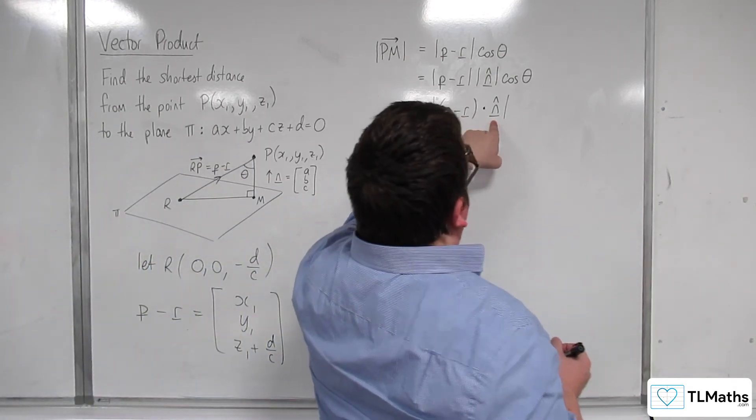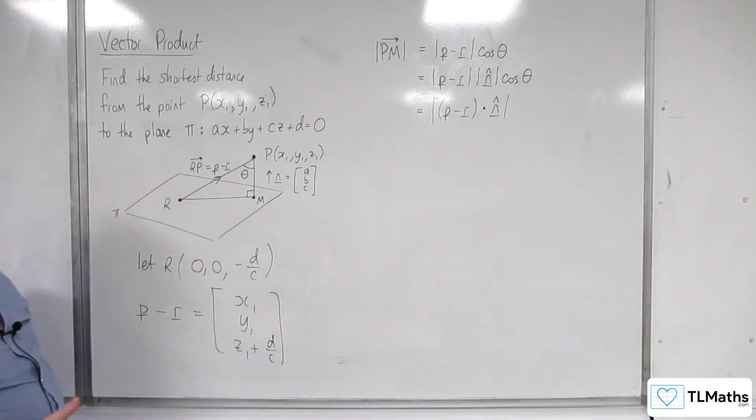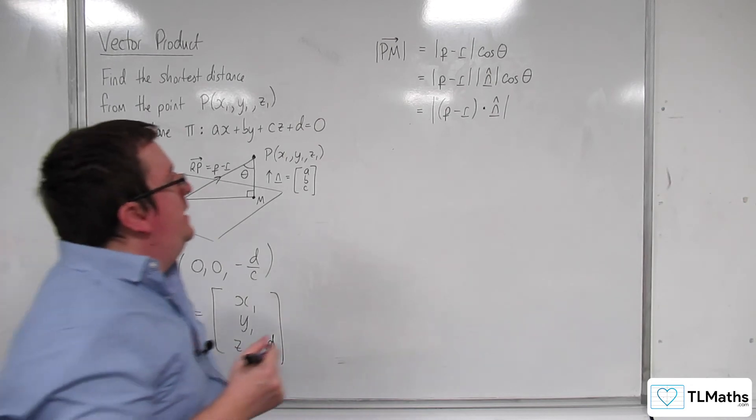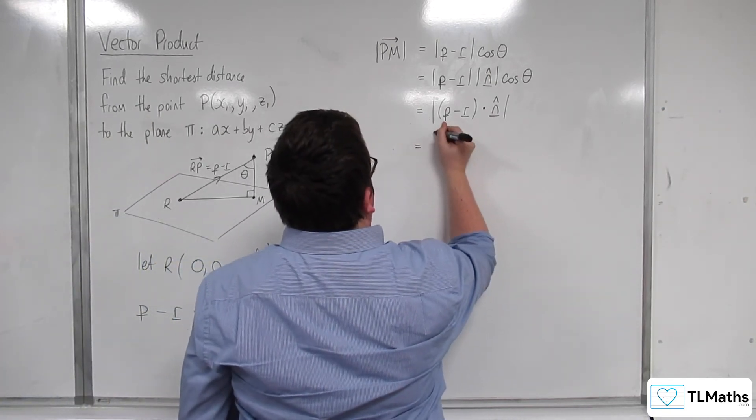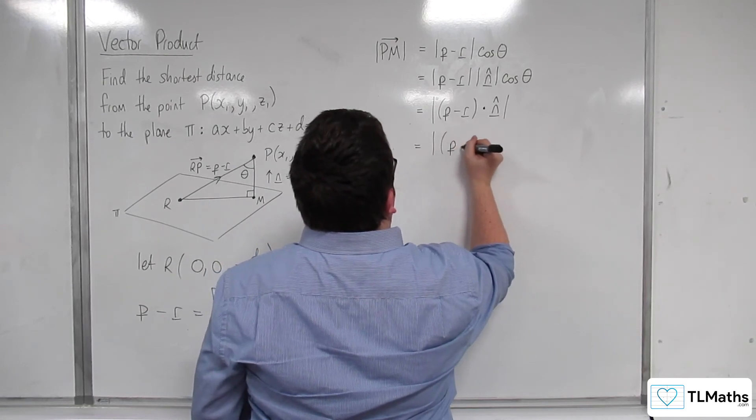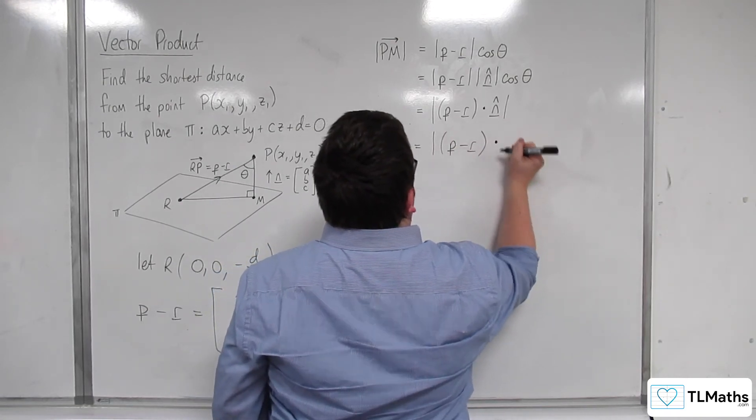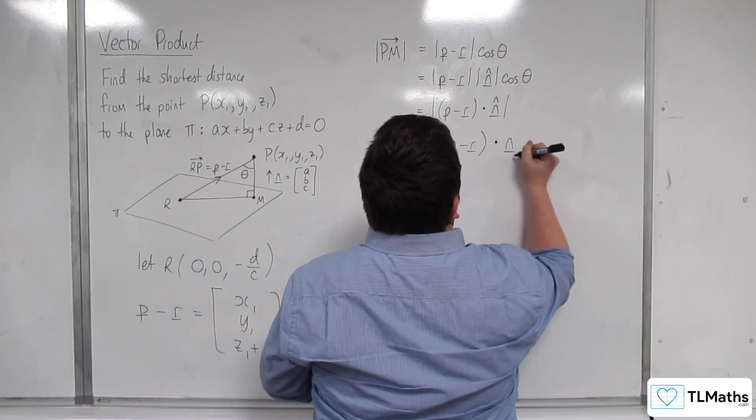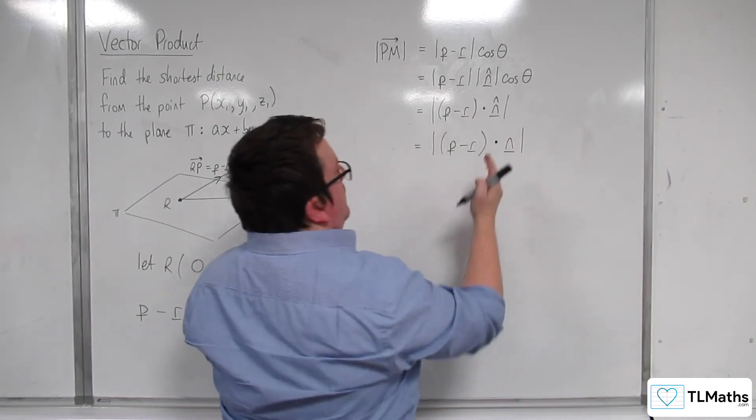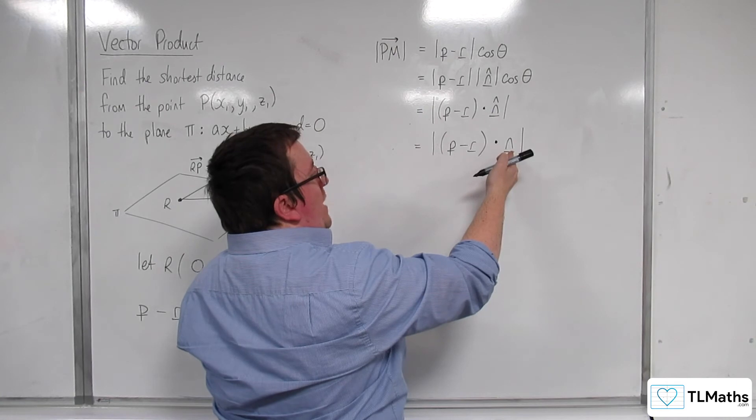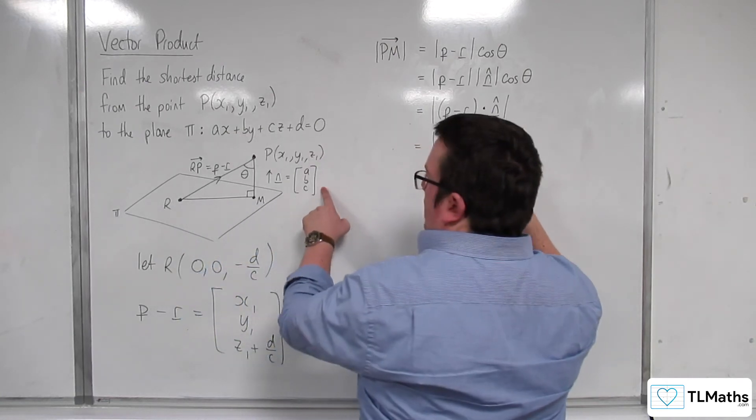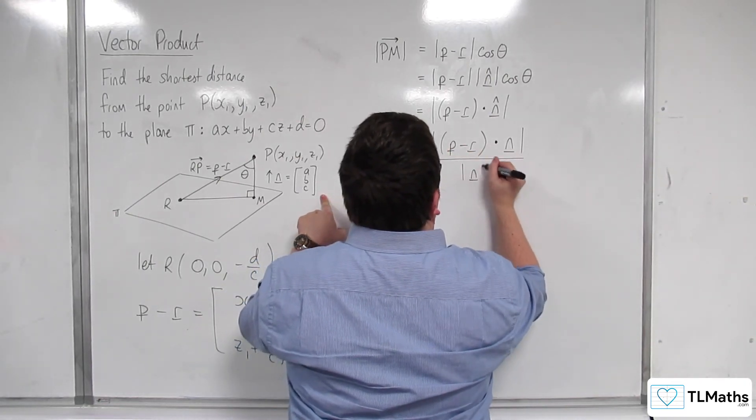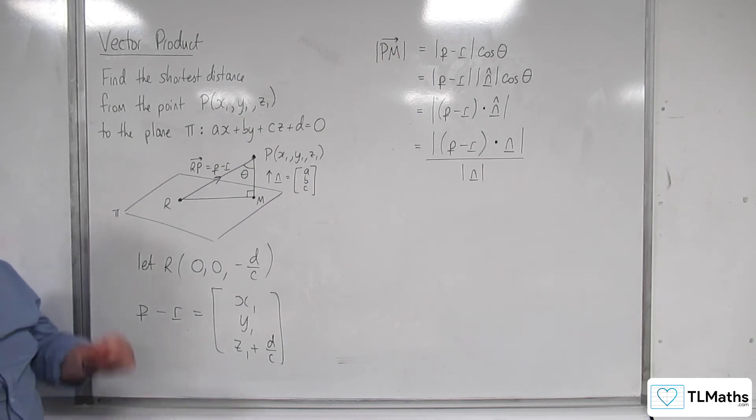Now, this unit vector in the direction of the normal vector, the unit normal, is the same as P minus R again dotted against the normal vector N, but that is divided by the square root of A squared plus B squared plus C squared, its length. So this is over root N. So I can divide the whole thing by root N.